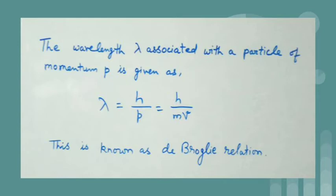In the relation, we see that wavelength lambda is the attribute or property of a wave while the momentum p is an attribute of a particle and the Planck's constant actually relates the two attributes.